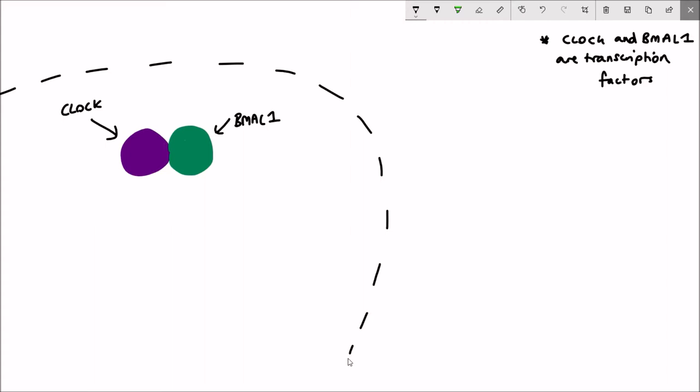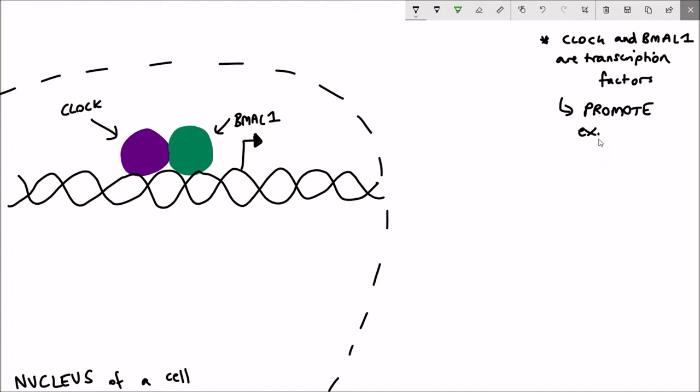To perform their role they need to be in the nucleus of the cell. Interestingly, two of the genes that CLOCK and BMAL1 regulate the expression of are cryptochrome and period, and they promote the expression of these two genes.